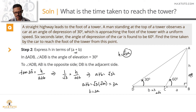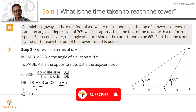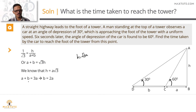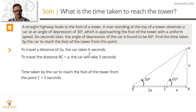The distance DC = B = 2A, and the car covered this in 6 seconds. The distance CB = A is half of that. So to cover distance A from C to B, it will take 3 seconds. The car will reach the foot of the tower from the second point of observation in exactly 3 seconds.